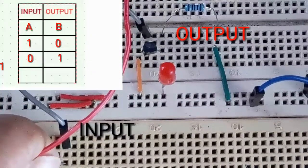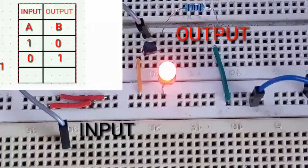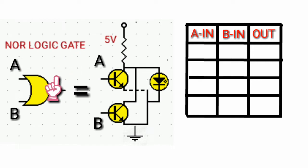You can see this circuit in my video on how the automatic night light works — I've put the link in the description below. Now let's talk about the NOR logic gate. This is the symbol of the NOR gate and the equivalent circuit diagram.